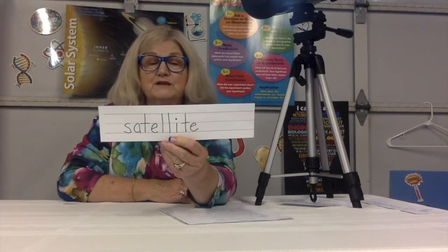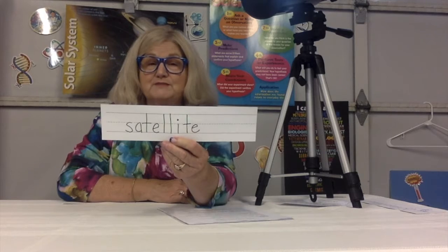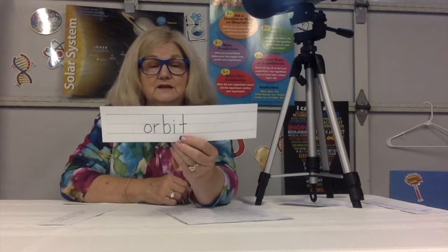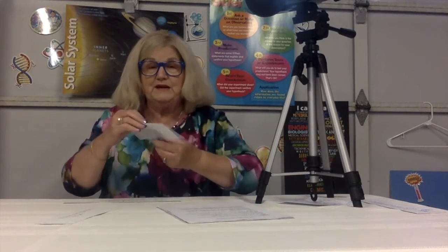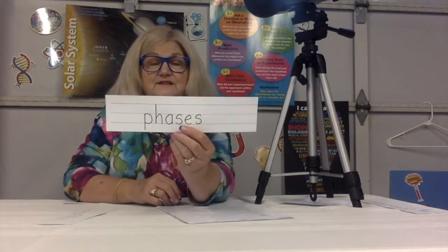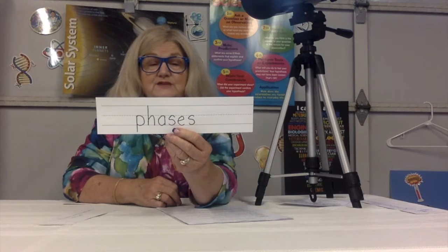A satellite is an object that moves around another object in space. Another vocabulary word is orbit — the moon moves around the earth in this kind of a path, called an orbit. Then we have phases: the moon cycle takes 28 days to complete, and the different appearances are called phases.